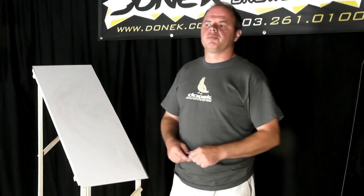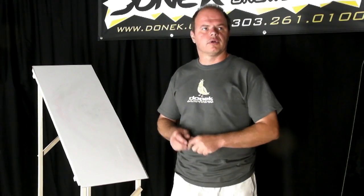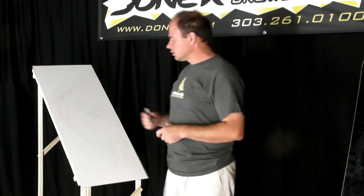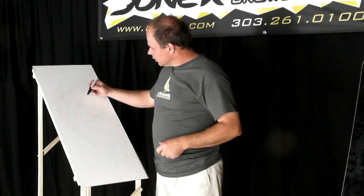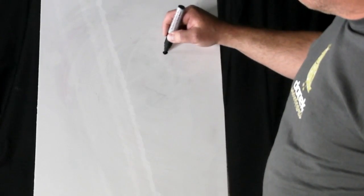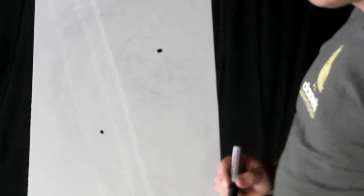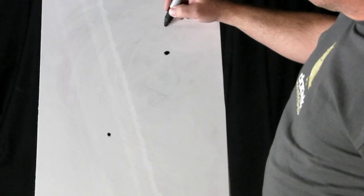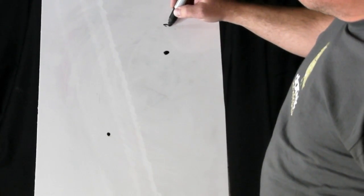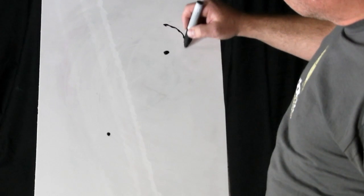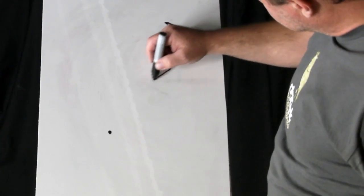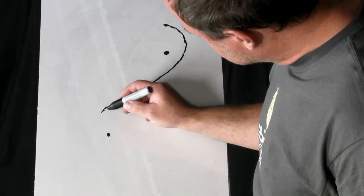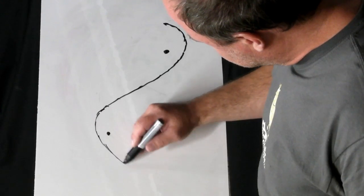There's one other turn shape we might want to consider for a racer, because of certain situations that can arise on a race course. If you imagine this is a couple of gates in a race course, the racer is going to start his turn right above that gate, make a rapid direction change, and then try to accelerate towards the next gate, and then do the same sort of thing down here.